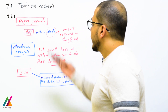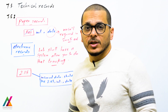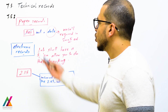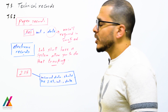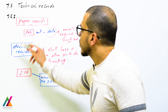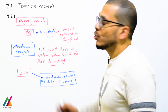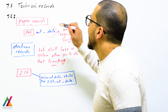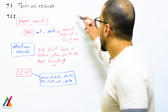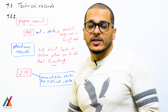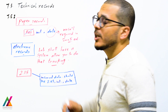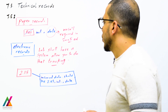The standard allows you to make changes, but they must be traceable to the original observation or original data. For paper records, if you find a result is incorrect, you should cross it out and add your initials and the date. In the 2005 edition, the date of alteration was not required, but in this edition the date must be included.